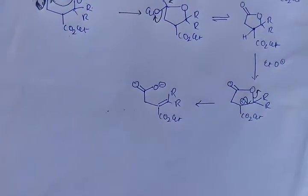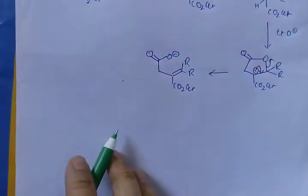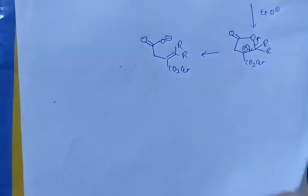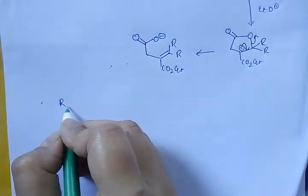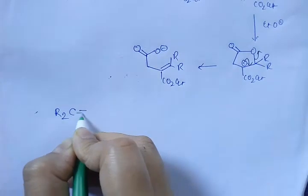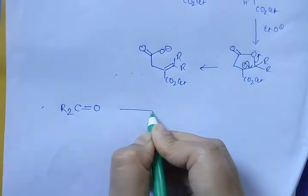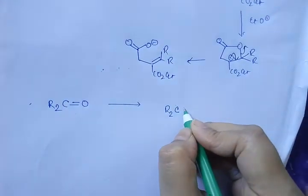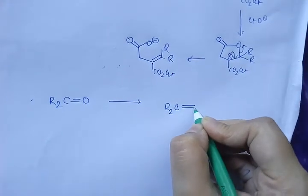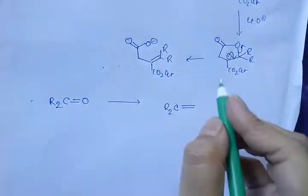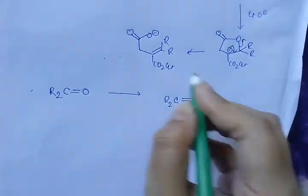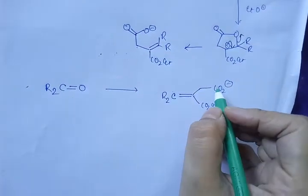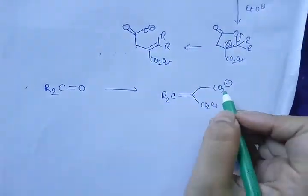This is our product. Our starting material, the ketone, was R-CO-R. It has no alpha hydrogen. And our product is R-C=O, here CO2Et. Your CH2-CH2-CO2-negative has one, two, three carbons increased.